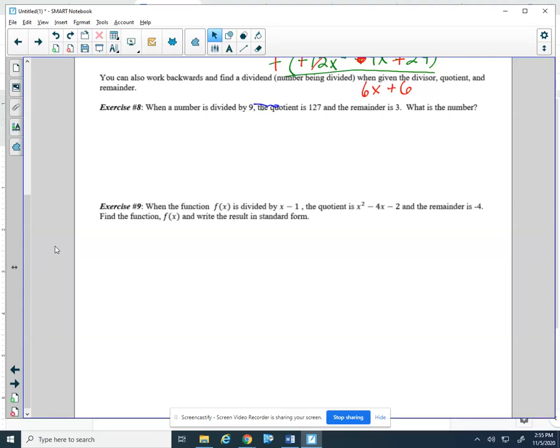We're going to start looking at working backwards with these. You can also work backwards and find a dividend or number being divided when given the divisor, quotient, and a remainder.